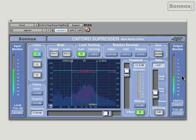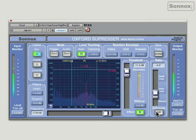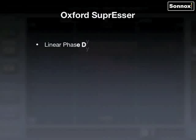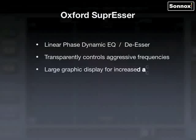To recap: the Oxford Suppressor is a linear phase dynamic EQ and de-esser. It transparently controls aggressive frequencies, has a large graphic display for increased accuracy, three different listen modes, automatic level tracking, full spectrum operation from 20 Hz to 20 kHz, and an advanced mode for ultimate control.